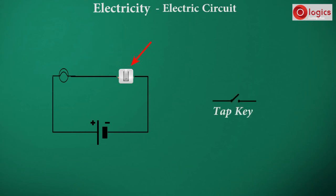The tab key is the switch, and it is represented like this. This is the electric plug, and the plug key is represented like this. This is also a switch.